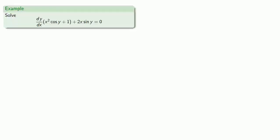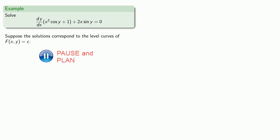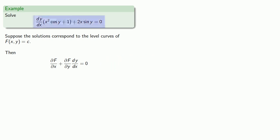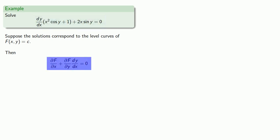So let's try to solve our differential equation. We begin with the idea that the solutions correspond to the level curves of f of x, y equals some constant. Then our total differential must equal 0. Our differential equation, which equals 0, and our total derivative, which also equals 0, can be set equal to each other.